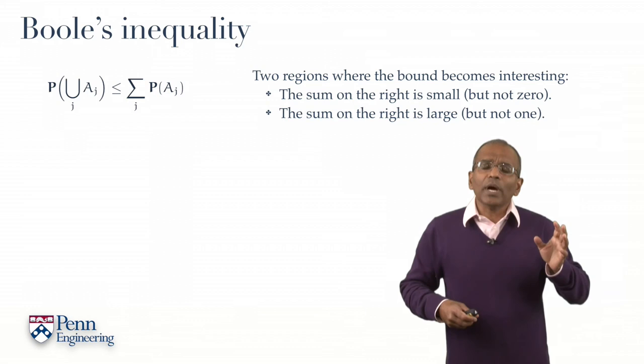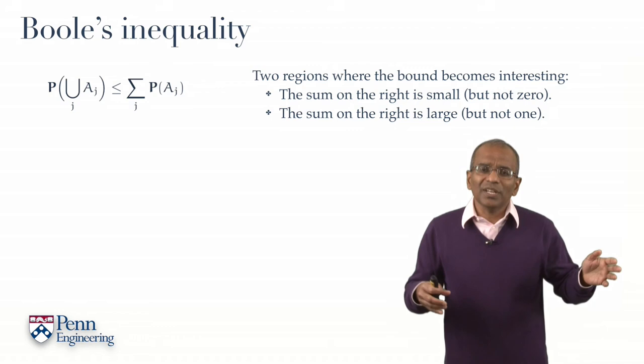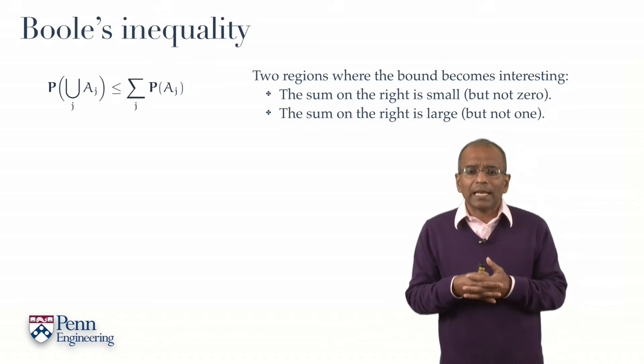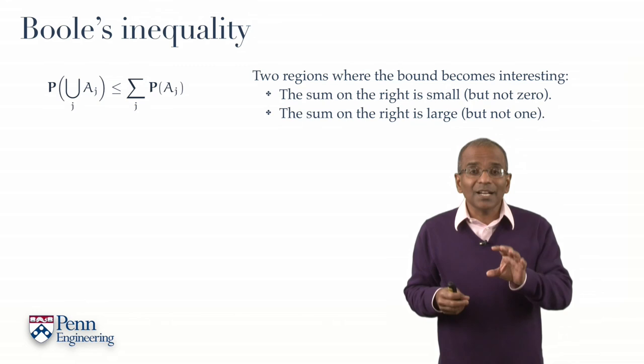What if the sum on the right is large? Now, what does that mean? Well, if the sum is one or larger, then that is patently useless, because we know a probability on the left cannot exceed one. Well, what if the sum on the right is not small, but it is not one exactly? Can anything useful be said? It turns out remarkably, yes.